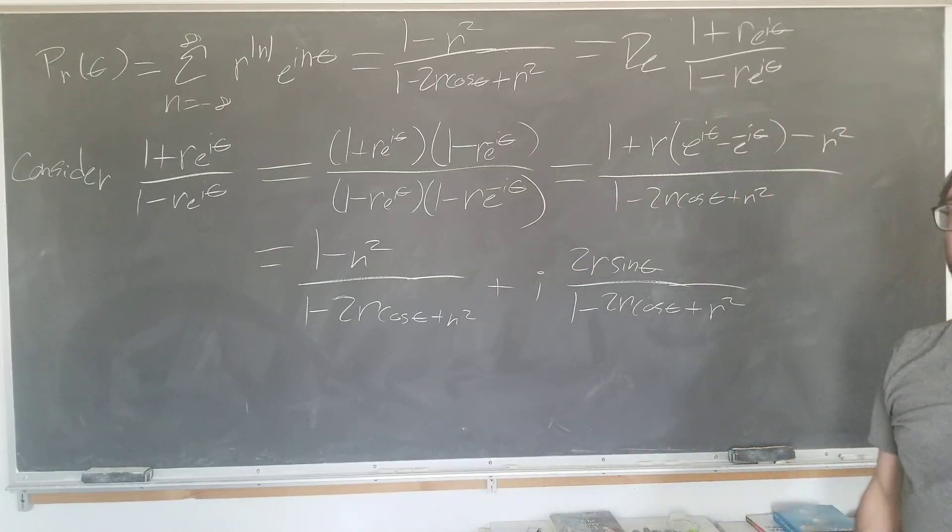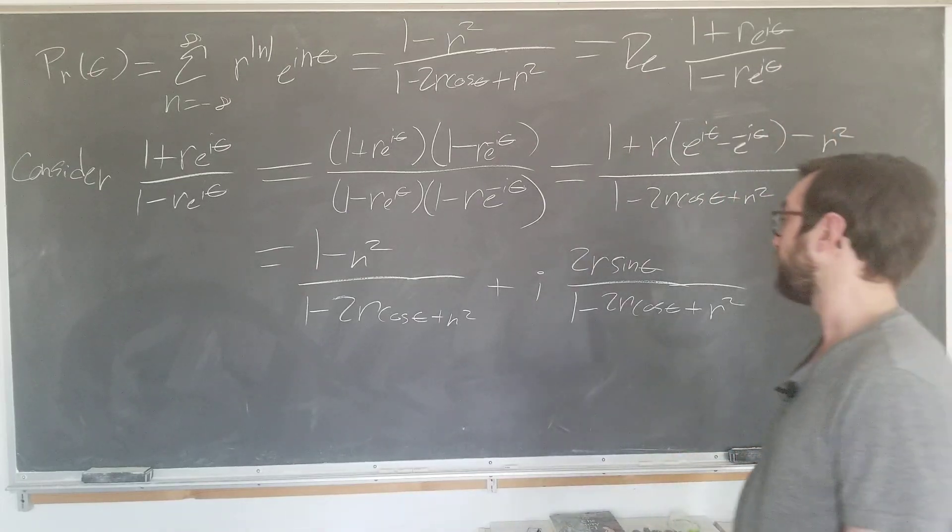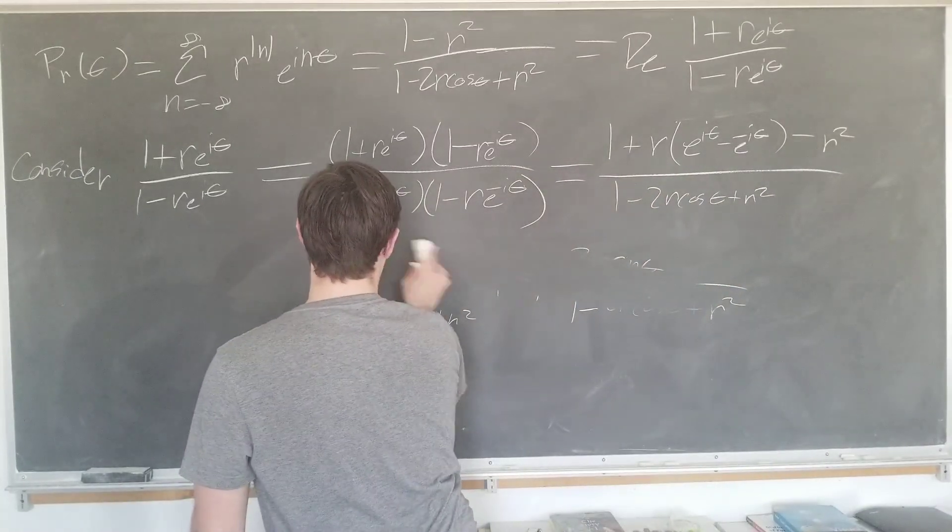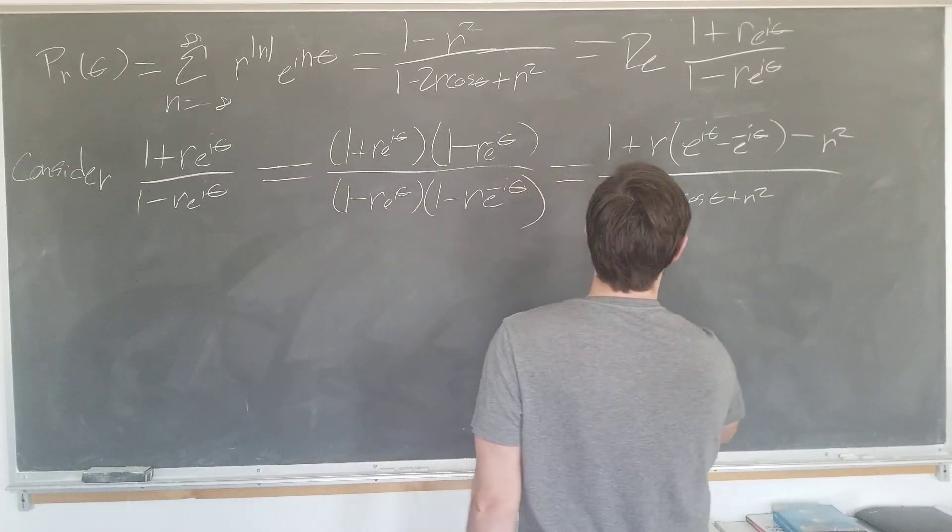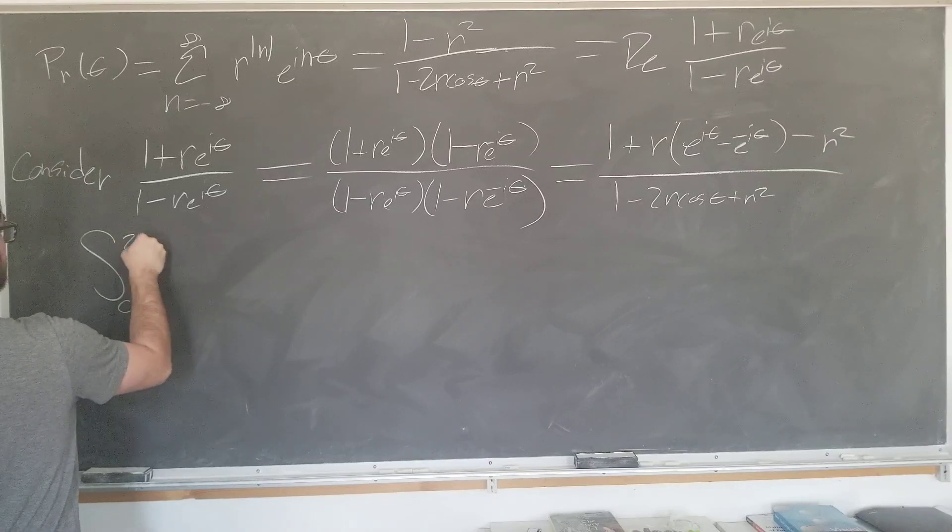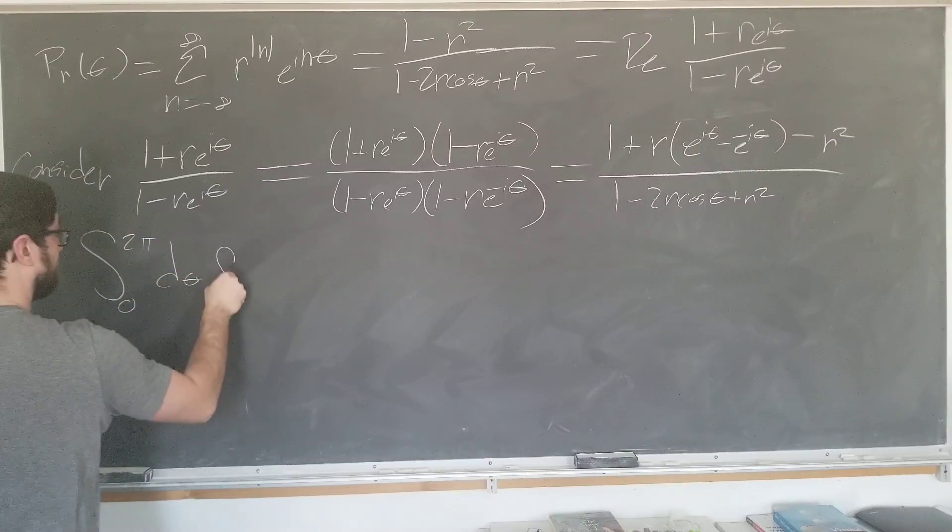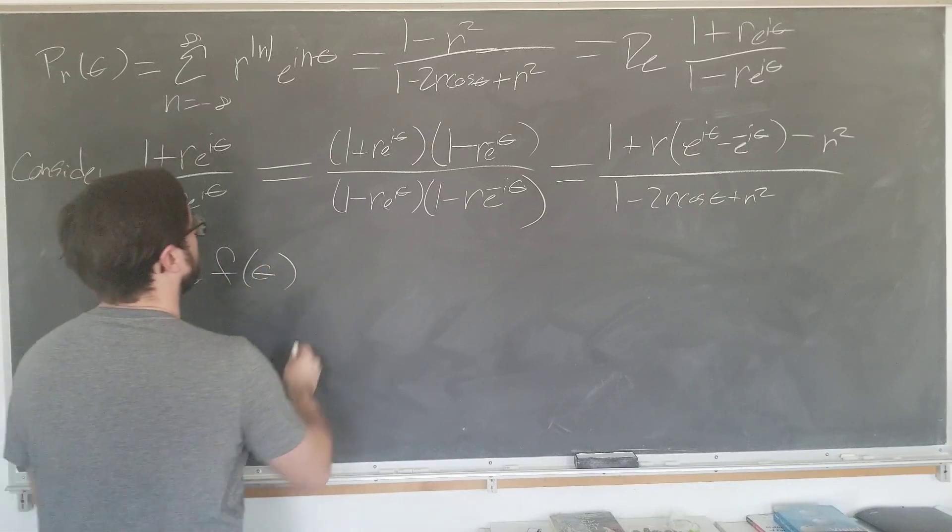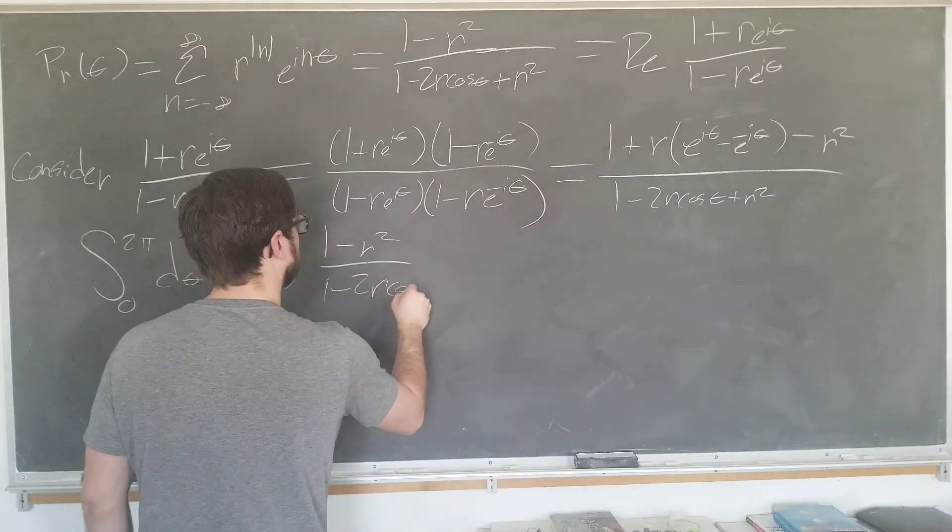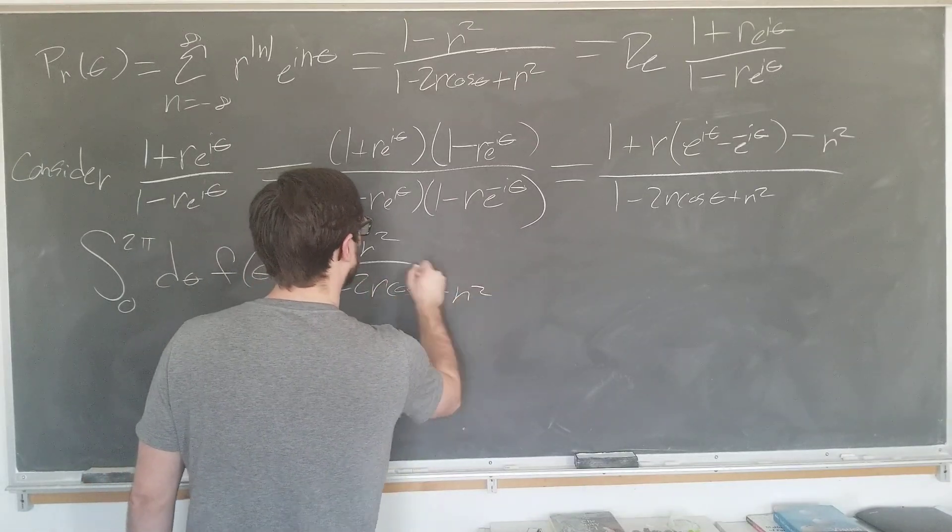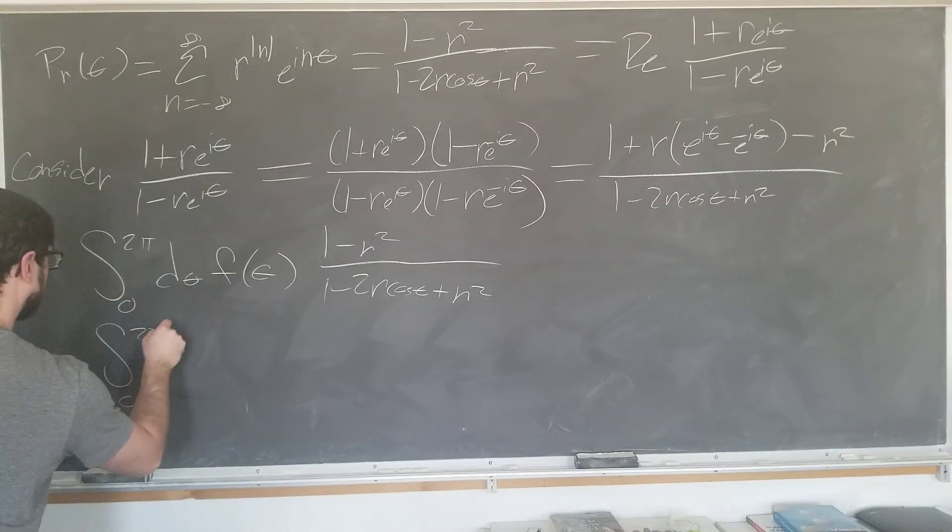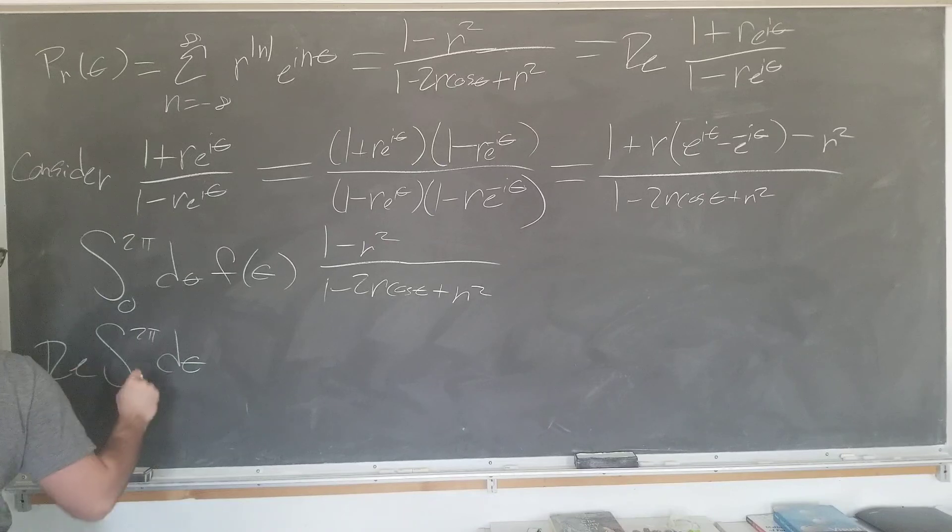Why would we want this? Well, let's go ahead and look at the two cases that we derived. We would use these cases if we had, for the first one, integral of some function of theta, a real function, times 1 minus r squared over 1 minus 2r cosine theta plus r squared. And if we had a complex function, write this as, take the real part of the whole thing.